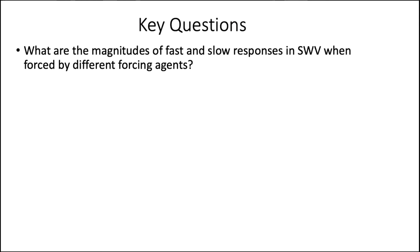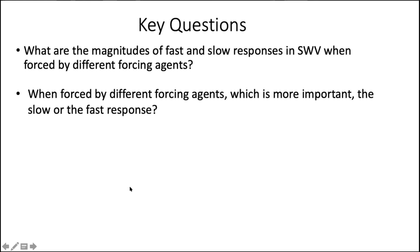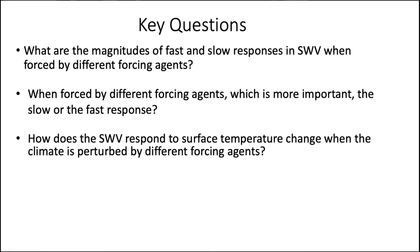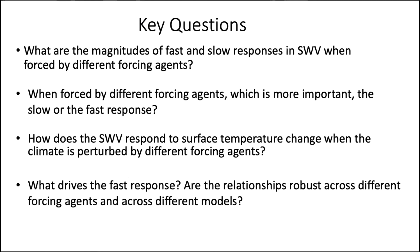Here are our key questions: First, what are the magnitudes of fast and slow responses in stratospheric water vapor when forced by different forcing agents? Second, which component is more important — slow or fast response? Third, how does stratospheric water vapor respond to surface temperature change across different forcing agents? And finally, what drives the fast response, and are these relationships robust across different forcing agents and models?